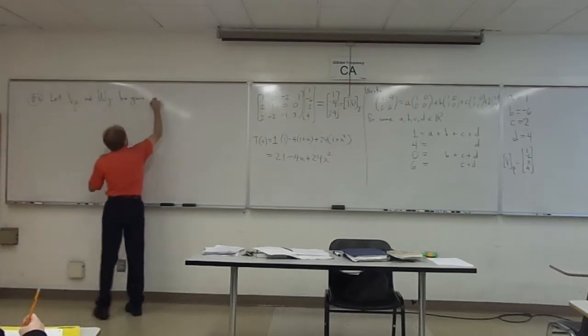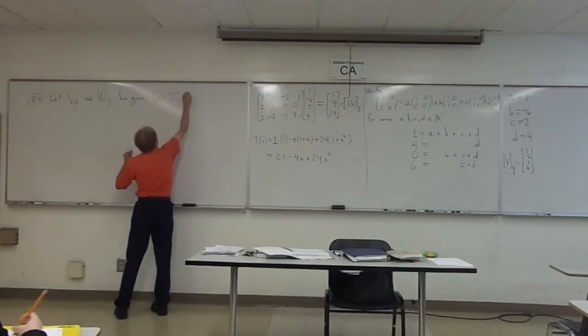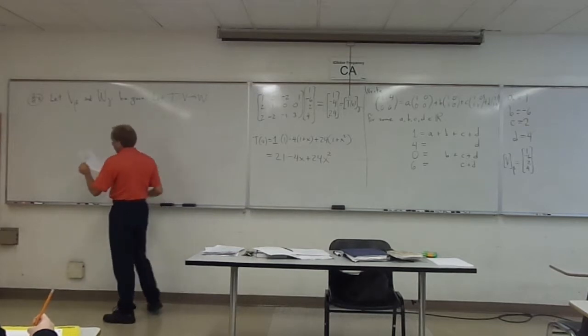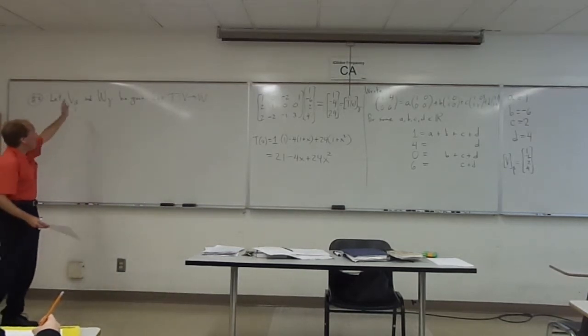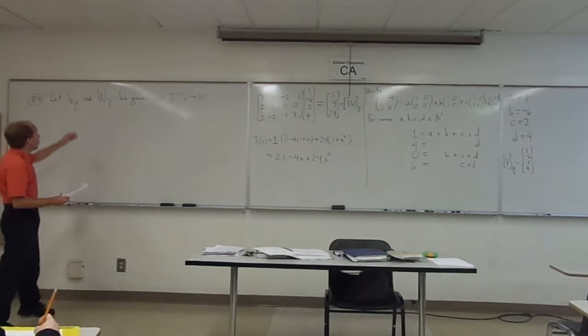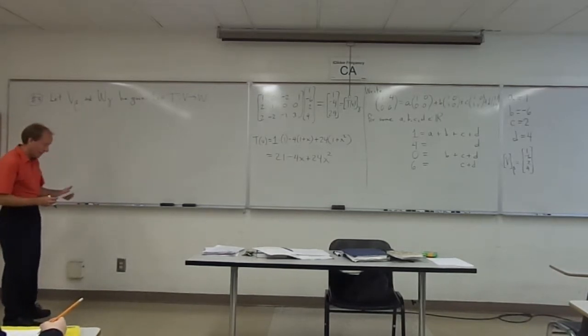Okay, and let T go from V to W. So as usual, we have a linear transformation between V and W with those bases established. Okay, and they are ordered bases, right, unless I say otherwise.